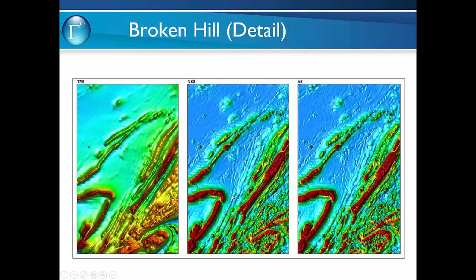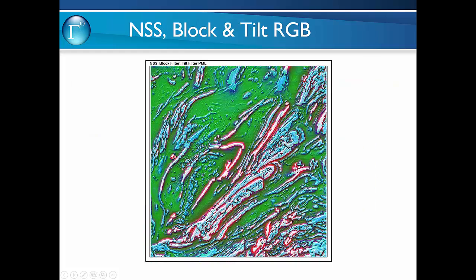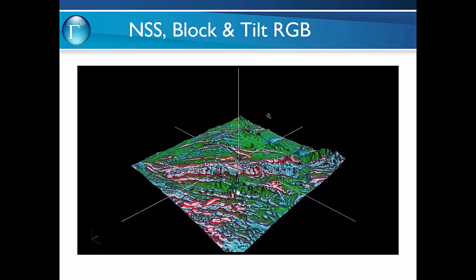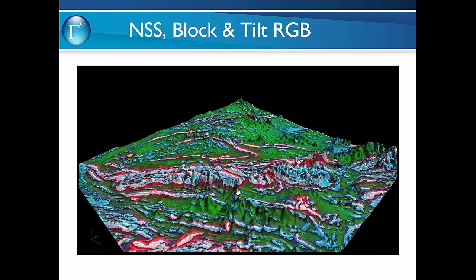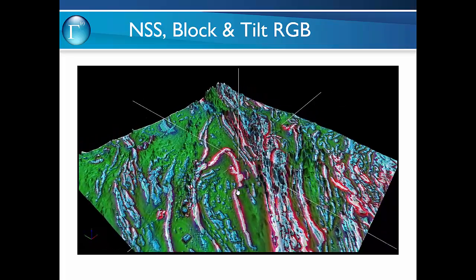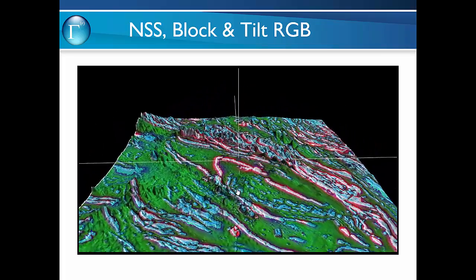Here's an example for Broken Hill where we've used the normalised source strength, block filter, and tilt filter in a pseudo-magnetic lithology type of image, using a ternary RGB with a shadow from the tilt filter. We've also draped the ternary RGB image over the terrain to see the correlation between terrain-related features and the magnetic responses.